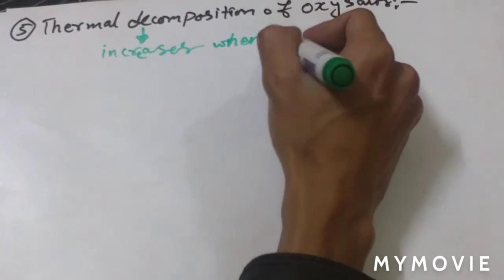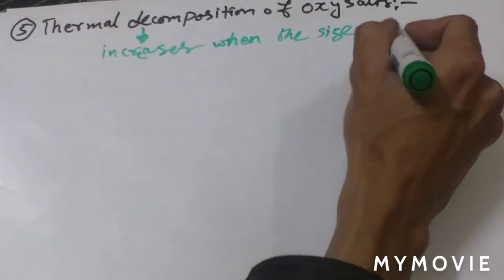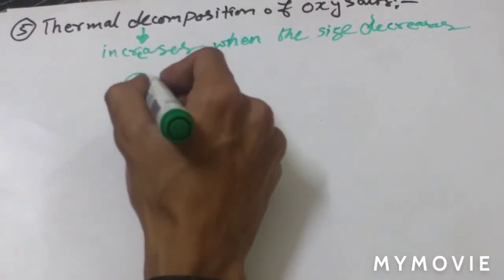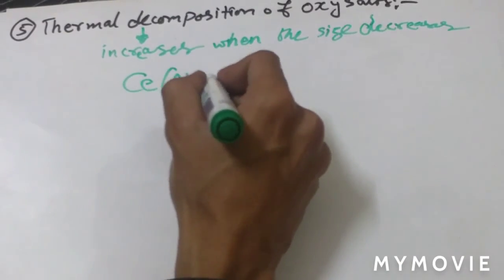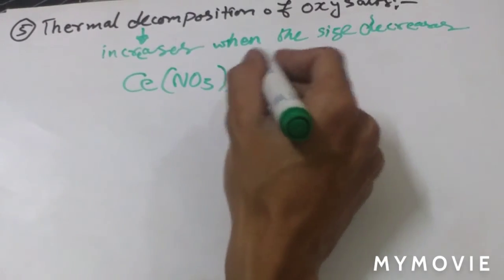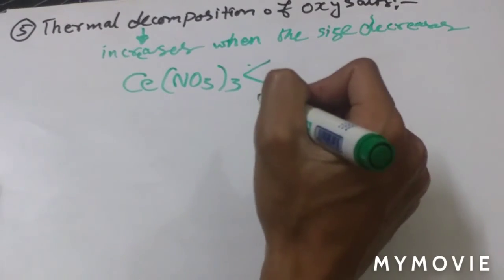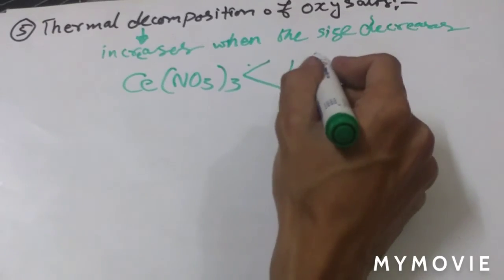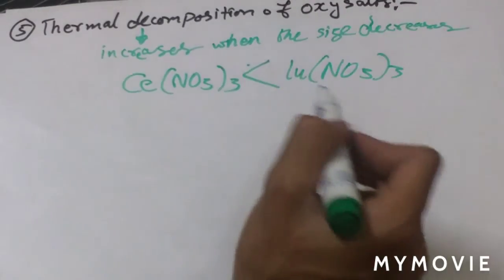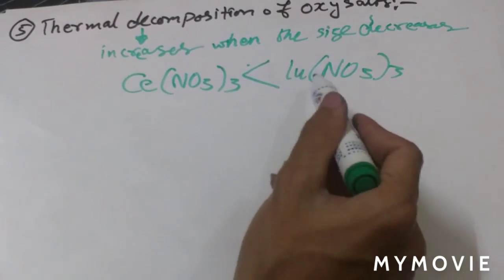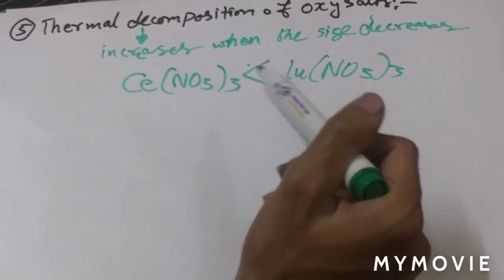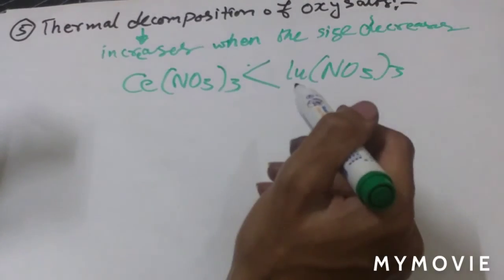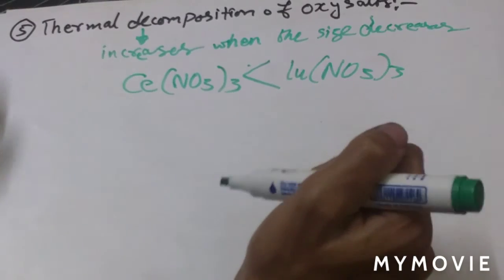When atomic number increases and size decreases among the lanthanides, thermal decomposition increases. So Ce(NO₃)₃ is weakly decomposable as compared to Lu(NO₃)₃. In this method we get lutetium products first, then cerium, allowing us to distinguish and separate the lanthanides easily.